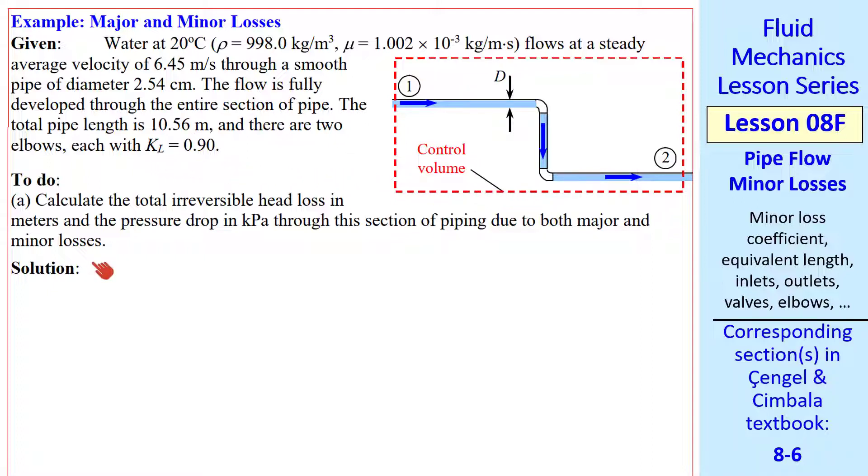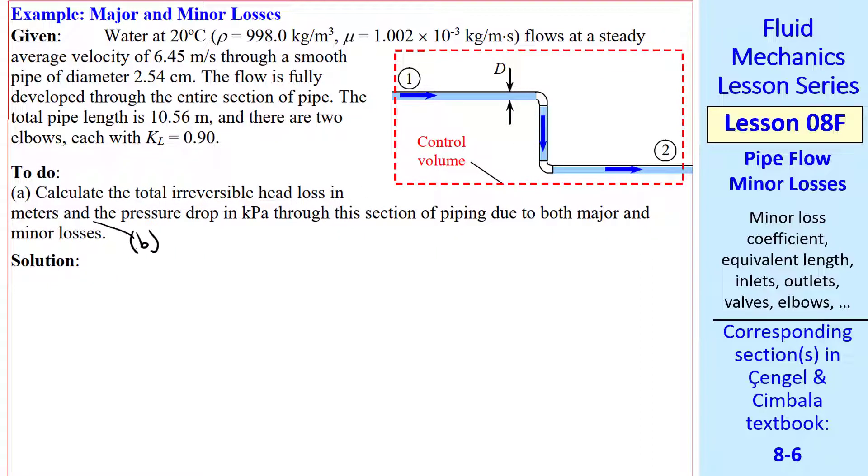We want to calculate the total irreversible head loss in meters, and the pressure drop in kPa through this section of piping. There are both major and minor losses here.